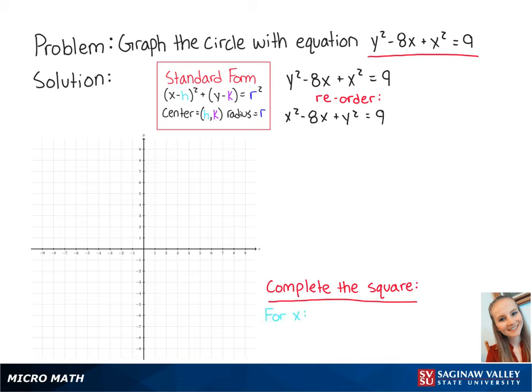To complete the square for x, we take the coefficient of x, which is negative 8. We multiply it by 1 half, which is equal to negative 4. Then we take negative 4 and we square it, which is equal to 16. So now we add 16 to both sides of the equation.